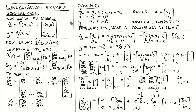The first step is to write the nonlinear model in the same format as the general nonlinear state variable model. From the differential equations, we can easily write down that the derivative of the state vector is given by this vector of nonlinear functions in terms of the states and the input. The first function is f1 and the second function is f2. From the output equation, we identify the function g as shown over here.